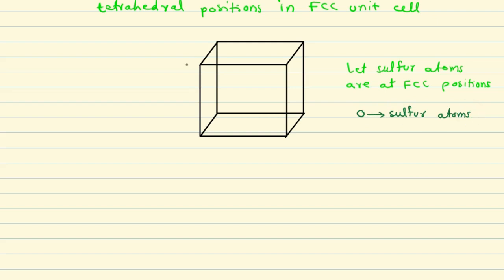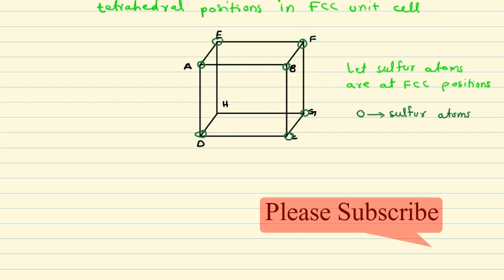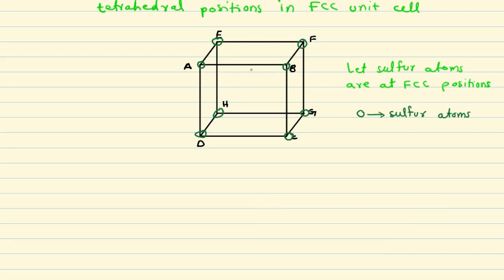Before putting atoms in, we will name the corners — that will help us later in understanding the structure. The corners are labeled A, B, C, D, E, F, G, and finally H. Now we put sulfur atoms at each corner and on all faces — top face, back face, front face, right side, bottom, and finally left side — as those are the lattice positions in FCC, that is face-centered cubic.